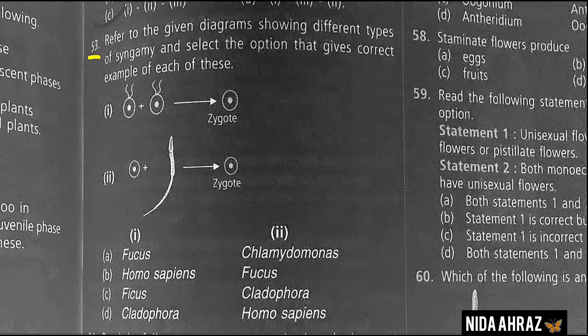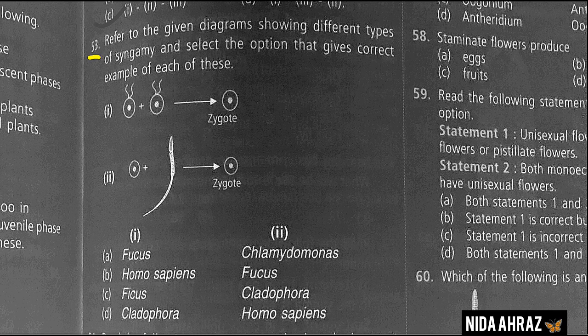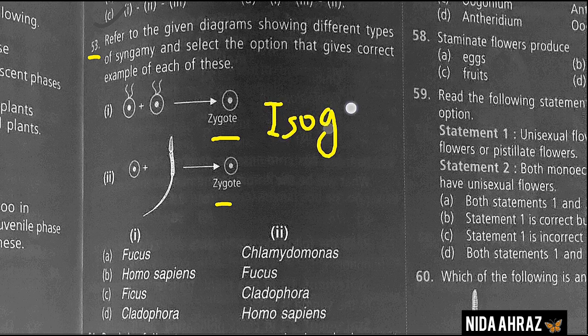Referring to diagrams showing different types of syngamy: syngamy is the complete and permanent fusion of male and female gametes to form the zygote. In Cladophora, reproduction is isogamous. Isogamy, shown in figure one, involves the fusion of gametes which do not differ morphologically but may differ physiologically.